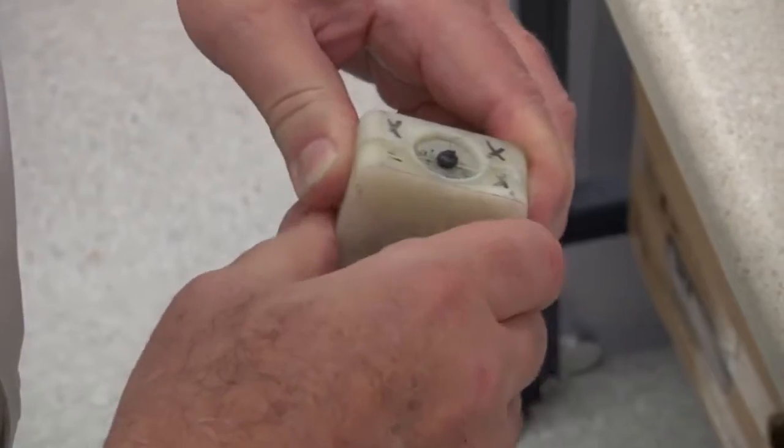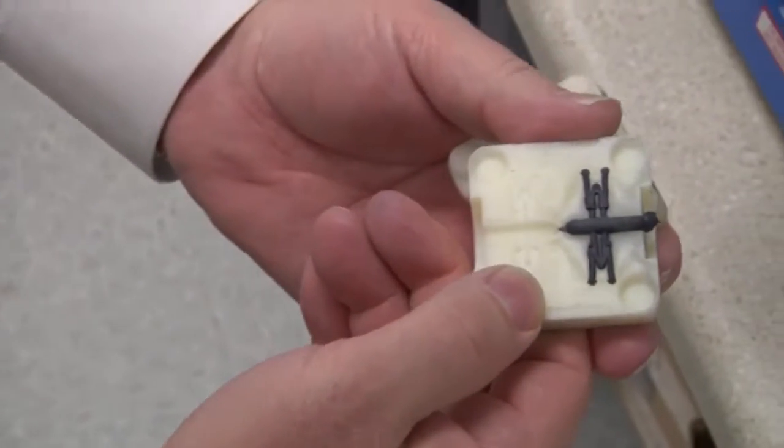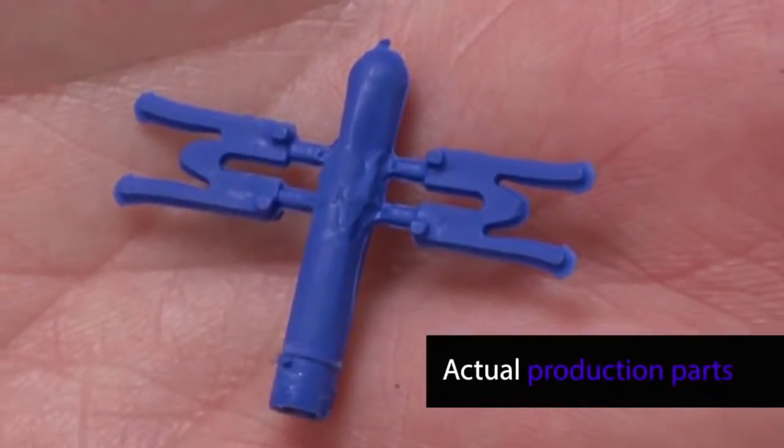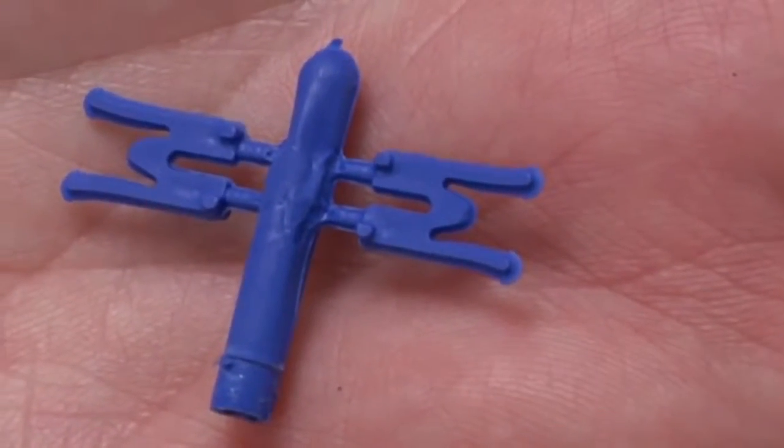They will just take the temperature. Some of the 3D printed molds you see, they're running real low temperature material. It has no physical properties at all. Besides being able to say they were molding, that's all it is. Whereas these are actual production parts.